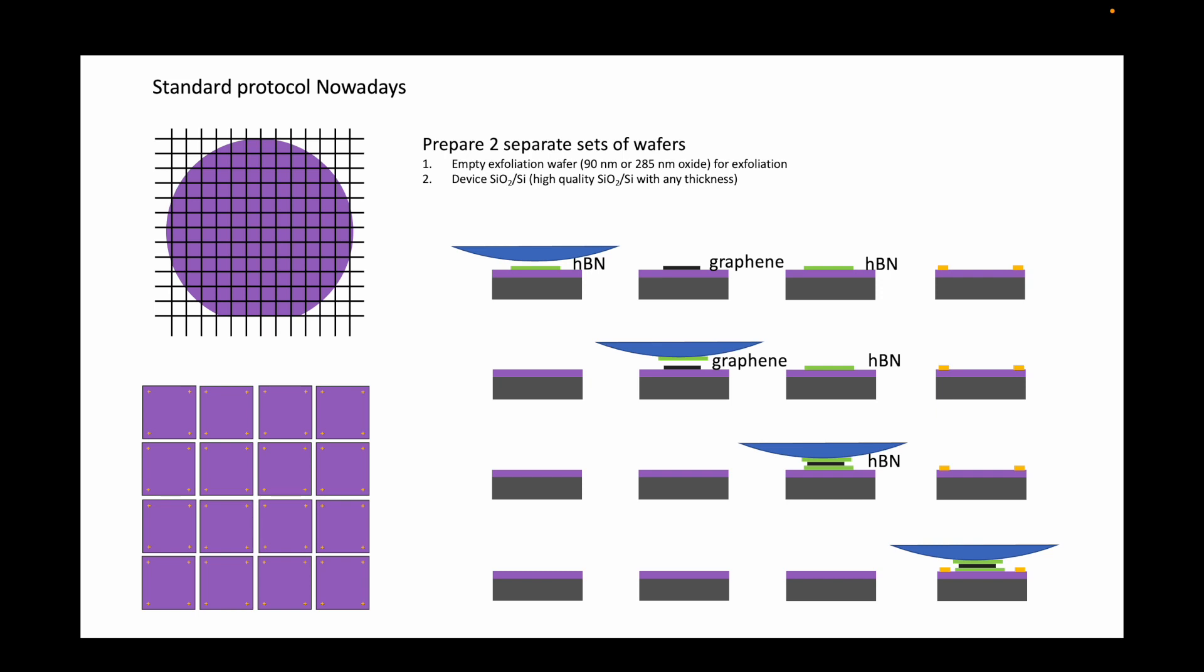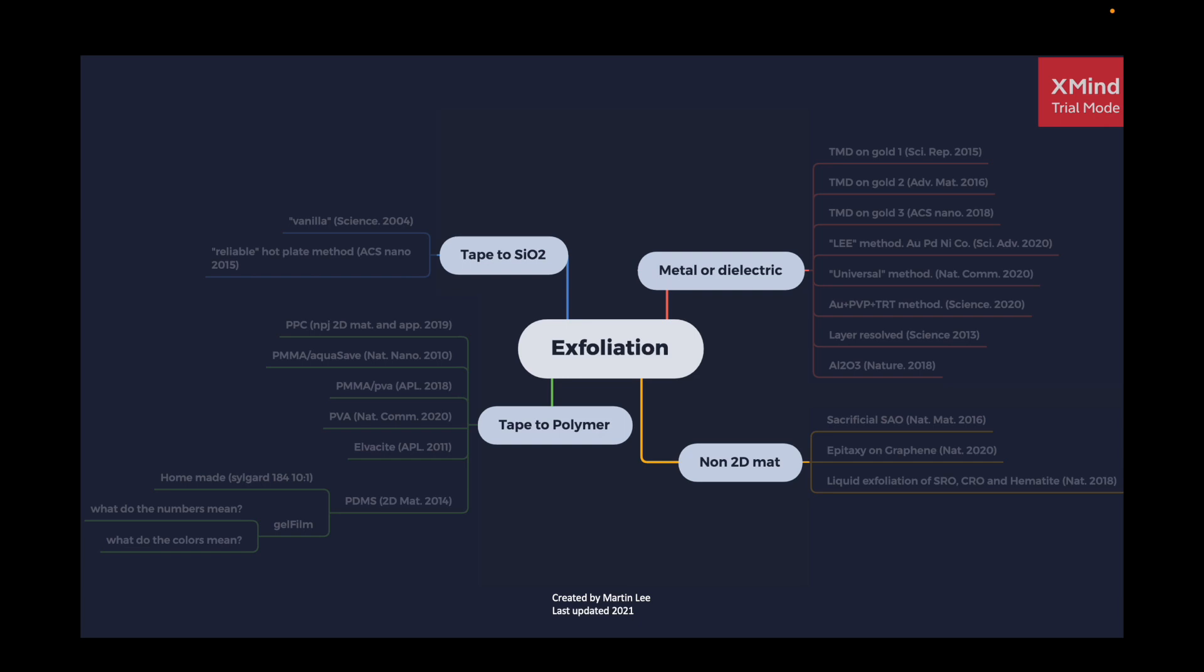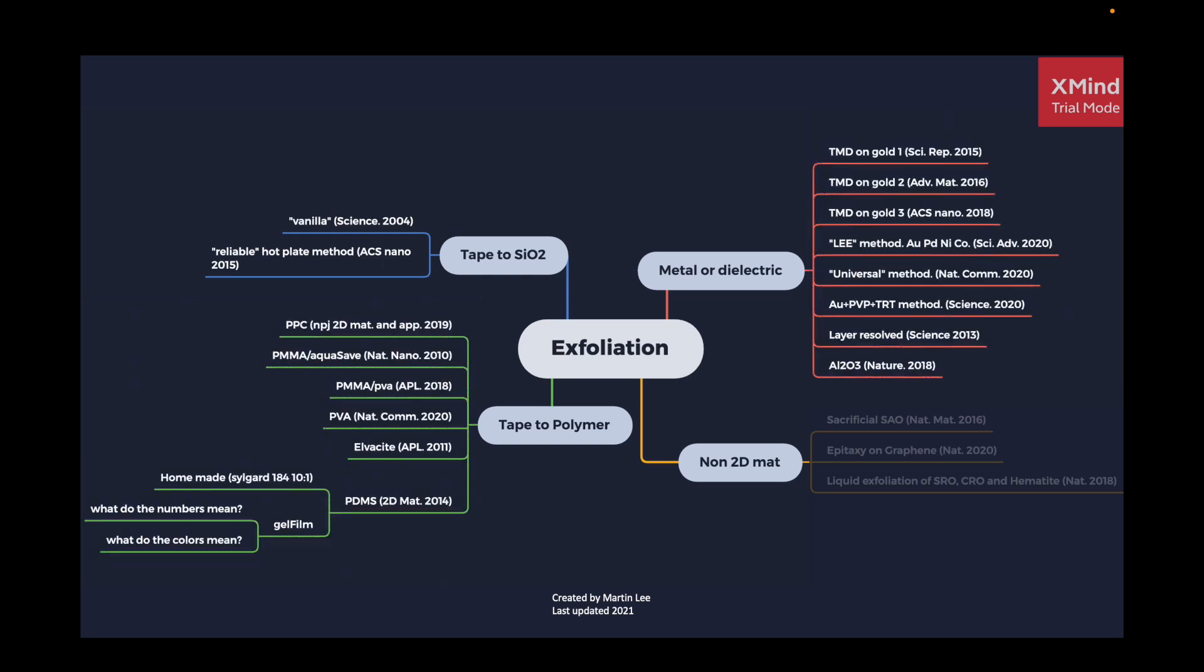Now with this in mind, let's move on to the first part of the video, which is the exfoliation. I took the liberty to make this mind map and classified some of the well-known exfoliation methods into these four categories, which are taking the exfoliation tape directly to the silicon silicon dioxide, taking the exfoliation tape to a polymer, using thin films of metal or dielectrics, and finally exfoliating non-2D materials.